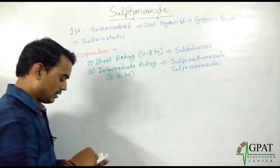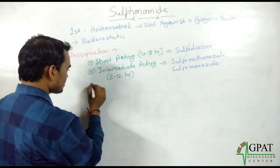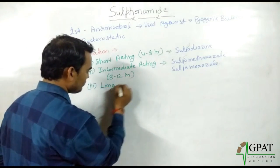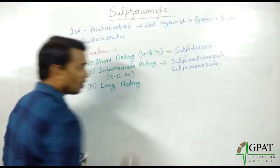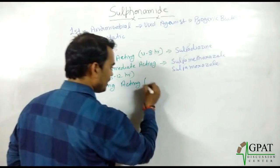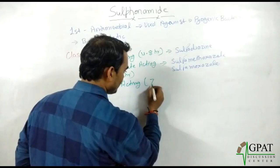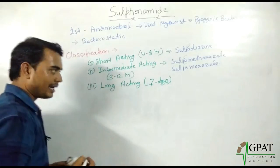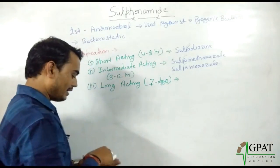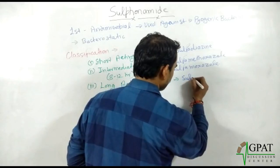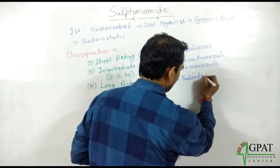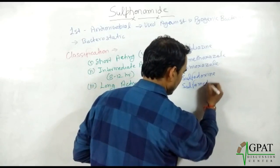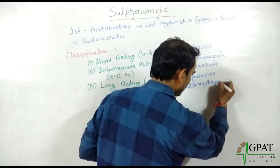The next subclass is long-acting. Long-acting sulfonamides have a half-life of nearly seven days. The drug names in this class are sulfadoxine and sulfamethapyrazine.